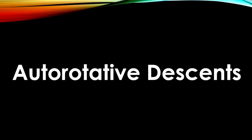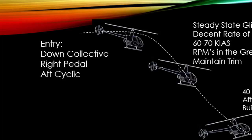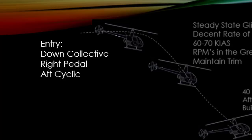Auto Rotative Descent — auto rotation: descending in non-powered flight where the rotor RPMs come from the upward flow of air. At the beginning of an entry to an auto rotation, we're always going to do the same three things: down collective, right pedal, and a little bit of aft cyclic at the entry.